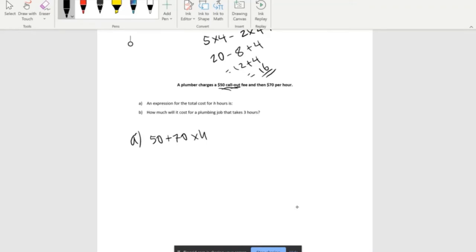To simplify this furthermore, it will become 50 plus 70H because we already know that in this space there's always a multiplication symbol. To simplify it, we can hide it and just put it next to each other, which gives us our final answer: 50 plus 70H.